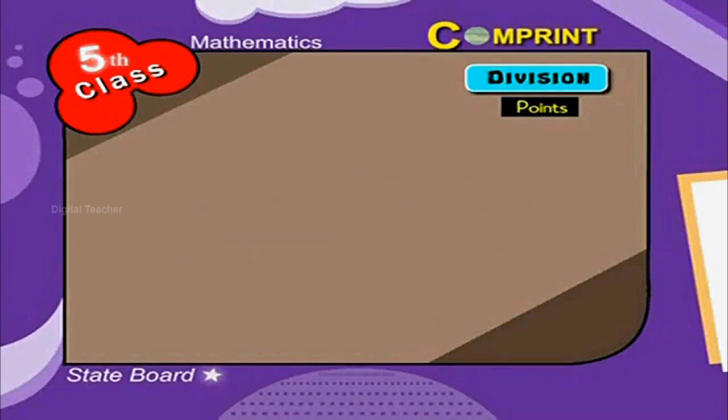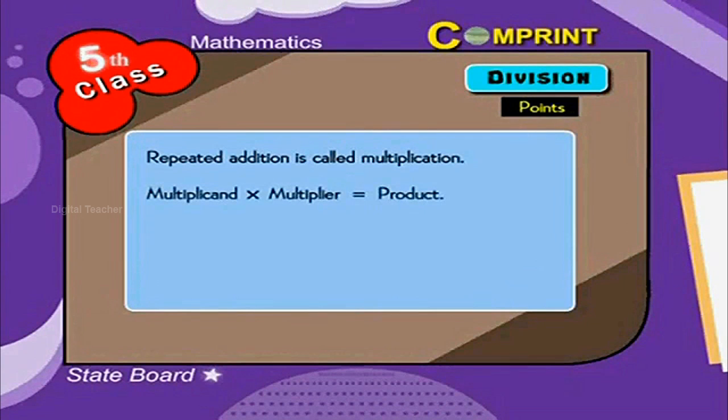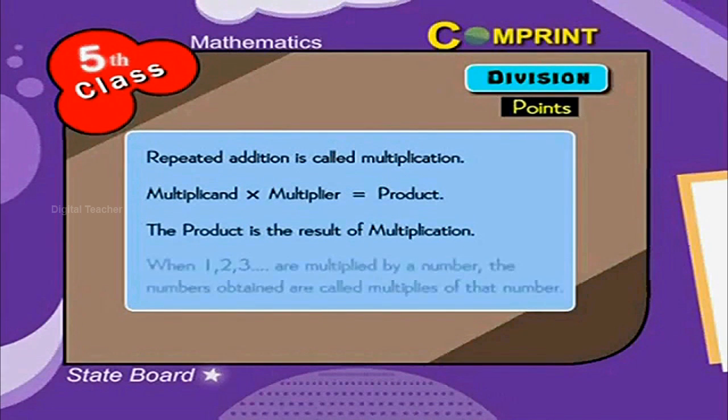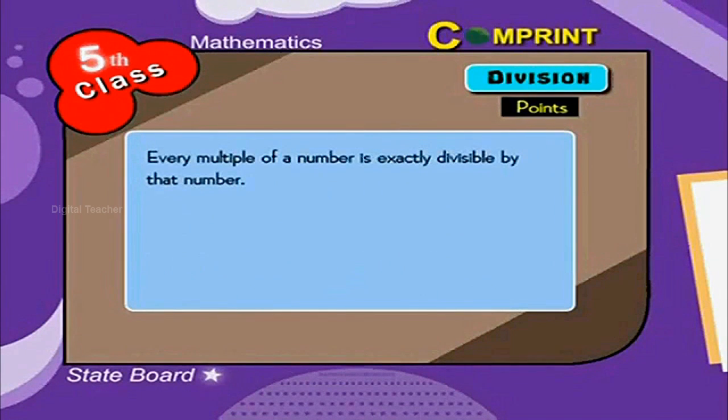Points to remember: Repeated addition is called multiplication. Multiplicand into multiplier is equal to product. The product is the result of multiplication. When 1, 2, 3 are multiplied by a number, the numbers obtained are called multiples of that number. Every multiple of a number is exactly divisible by that number.